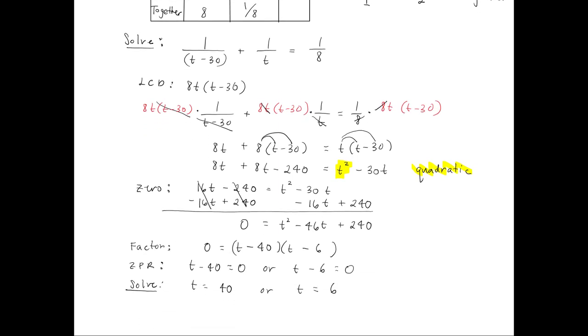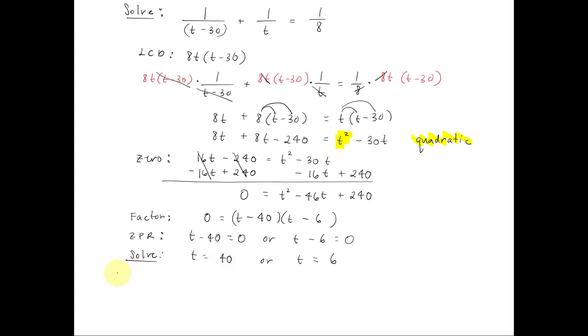If t is equal to 40, let's check to see which solution is best fit. This means Alfonso's time is t minus 30, so 40 minus 30 is 10. Alfonso's time is 10 hours when Zoe's time is 40 hours.